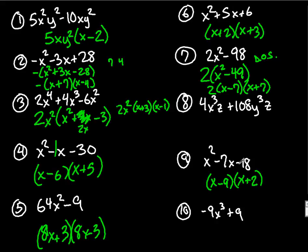Number 8, looking just for GCF, they have a z in both of them and you should be able to divide both of them by 4. When you do that, you're going to be left with x cubed and when you divide this by 4, you should be left with 27y cubed.